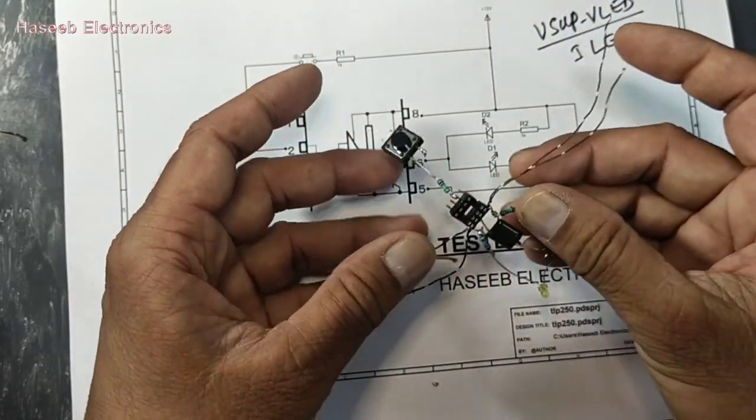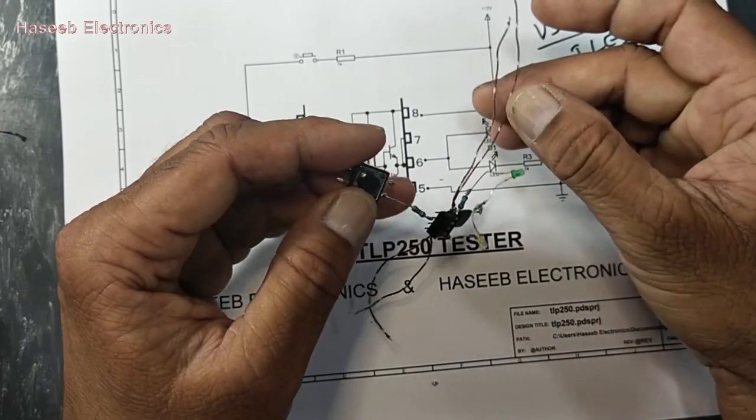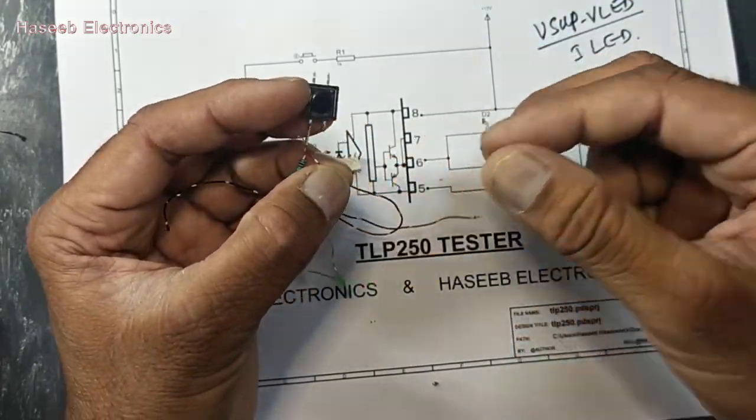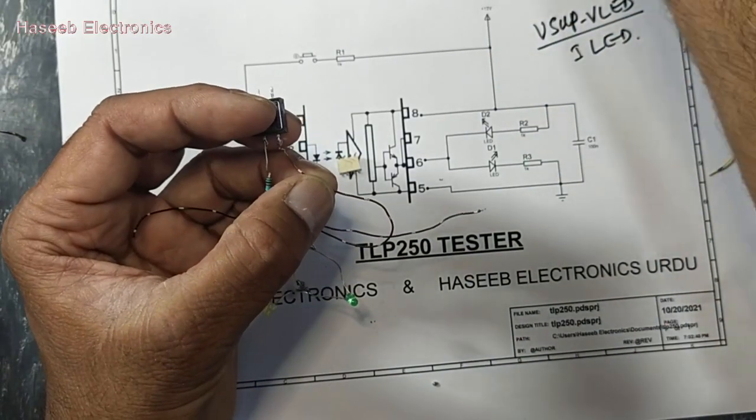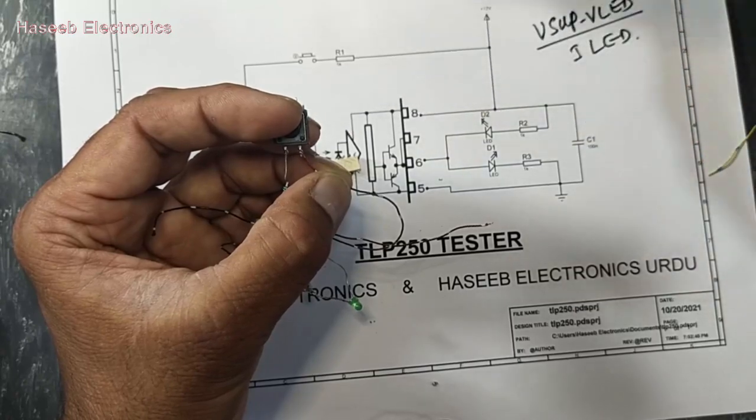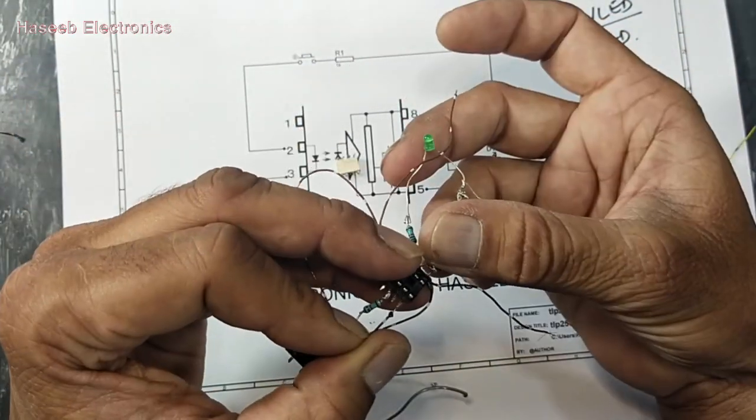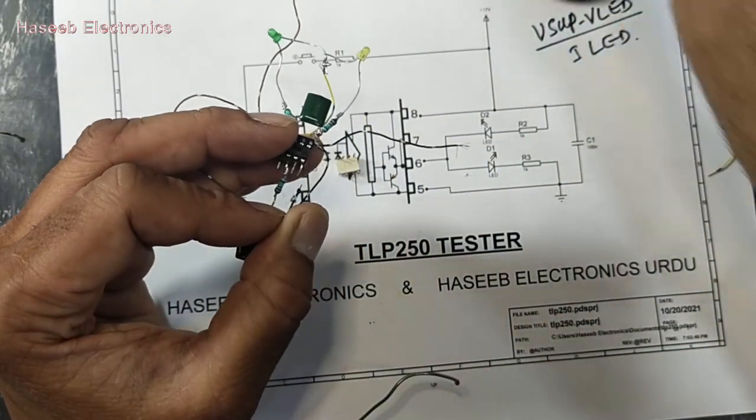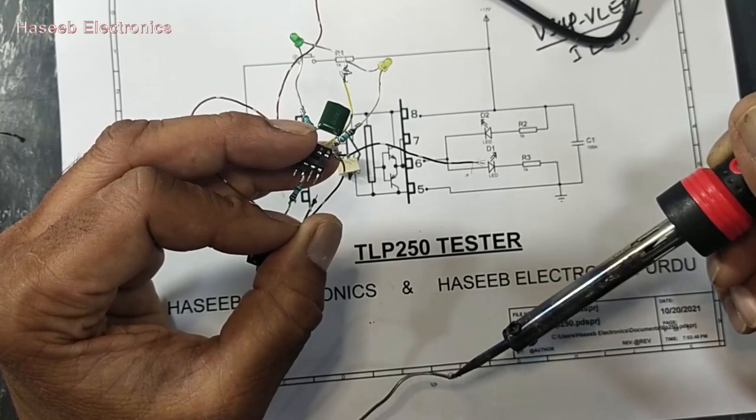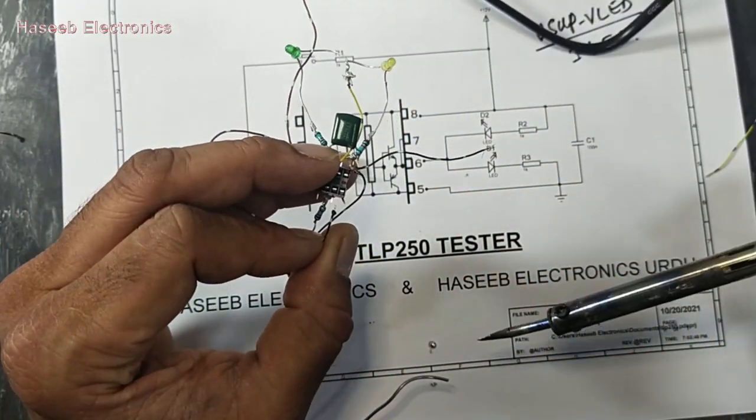I will connect pin number 8 to this switch so positive voltage will apply to the LED. We will connect ground pin to pin number 3. You can make this circuit on vero board but I am using it as a prototype to give a clear idea that everything is understandable and easy to follow.